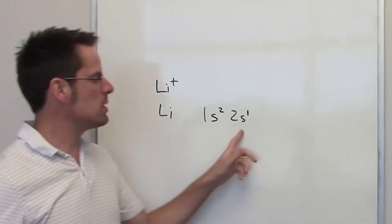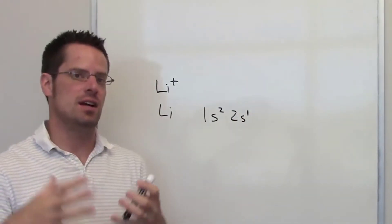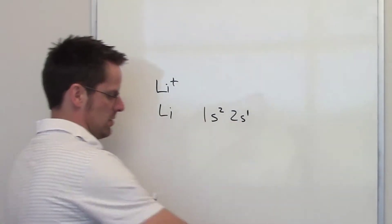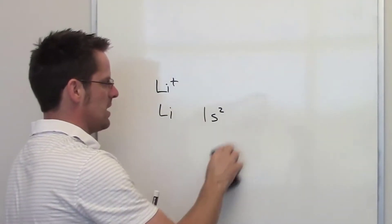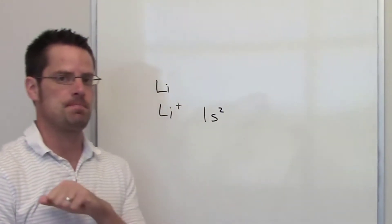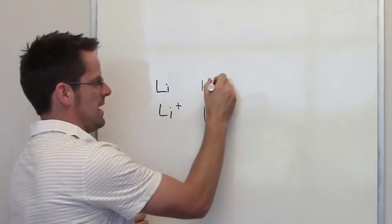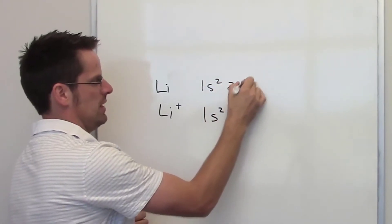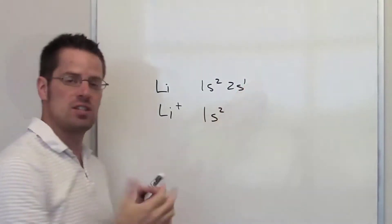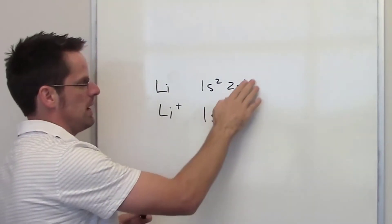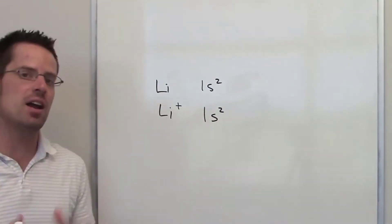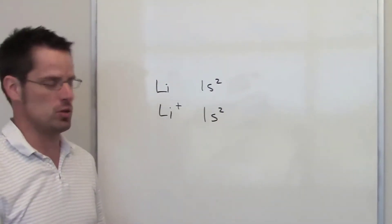That means that its outermost electron is in its 2s orbital. As lithium loses that outermost electron to become lithium cation, it now has the same electron configuration as that of helium. Once again, neutral lithium has an electron configuration of 1s2, 2s1. As it loses this outermost electron, its size is reduced by losing the occupation of that orbital to just become 1s2. So lithium cation would be smaller than neutral lithium.